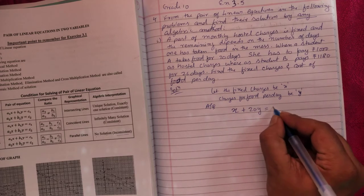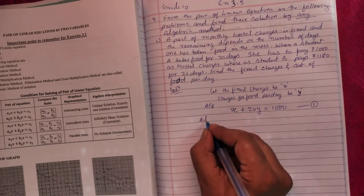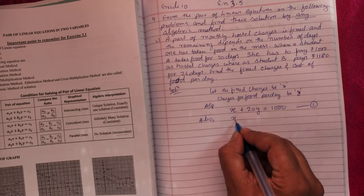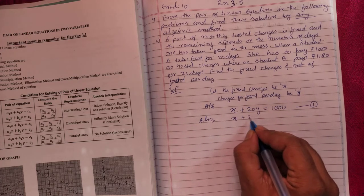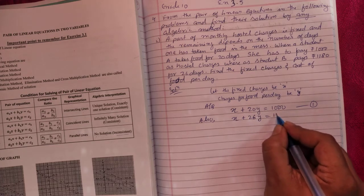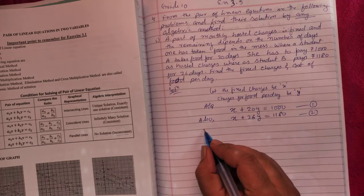This is your equation one. Second part, if she takes food for 26 days, so fixed charges plus 26y equals 1180. Mark this as equation 2. Since this is already an equation, you can solve directly.